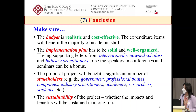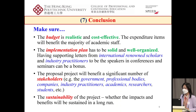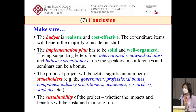Here are some key points to note. On budget: you need to be realistic and cost-effective, and expenditure items should benefit the majority of staff and the community. On the implementation plan: it needs to be solid and well-organized. Obtaining supporting letters from internationally renowned scholars and industrial practitioners to be speakers at conferences would be a bonus. The proposed project should benefit a significant number of stakeholders including the government, professional bodies, companies, industrial practitioners, academics, researchers, and students. Finally, consider the sustainability of the project — whether impacts and benefits will be sustained in the long term.